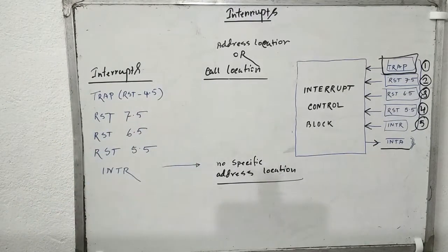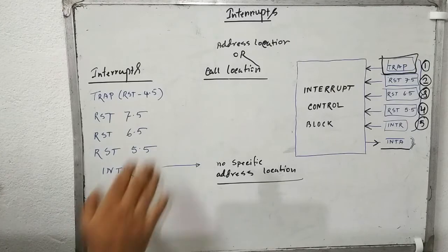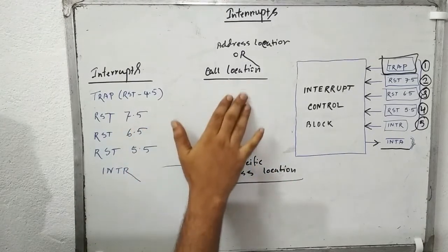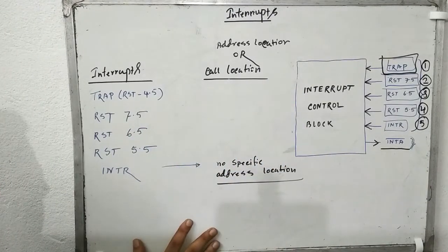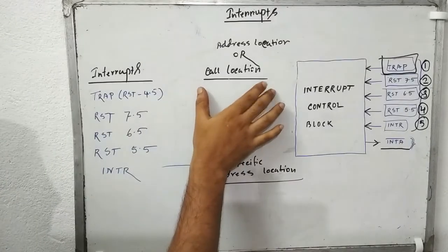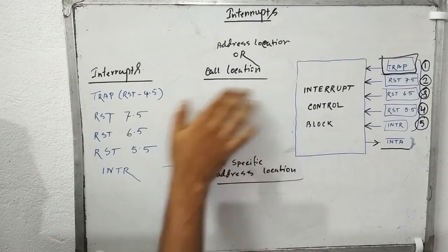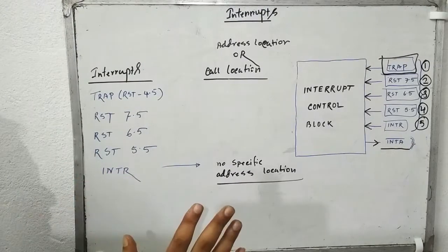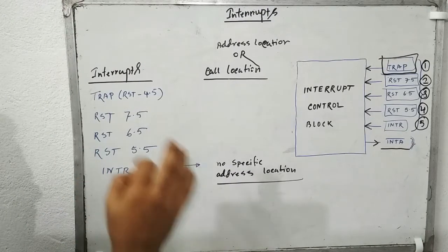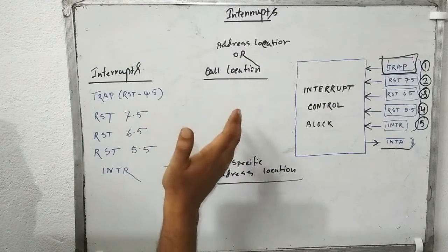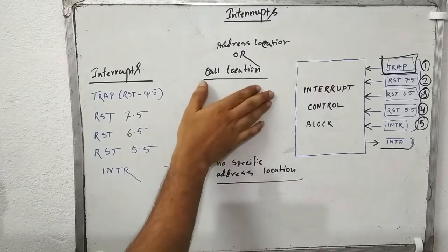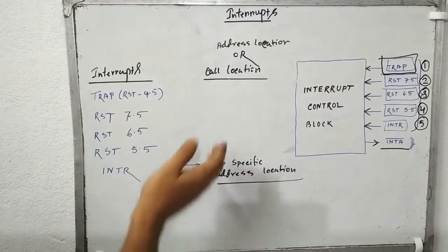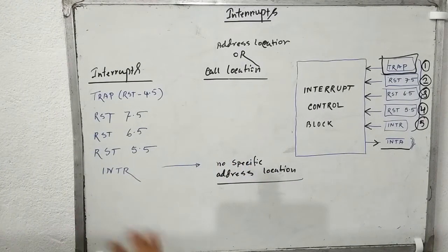So now we have the four remaining interrupts. There are two ways to approach this. One, you can just remember the chart — I will write all the specific address locations and you can memorize it. The second way is you can calculate the particular address location for each interrupt and put that value into the chart.